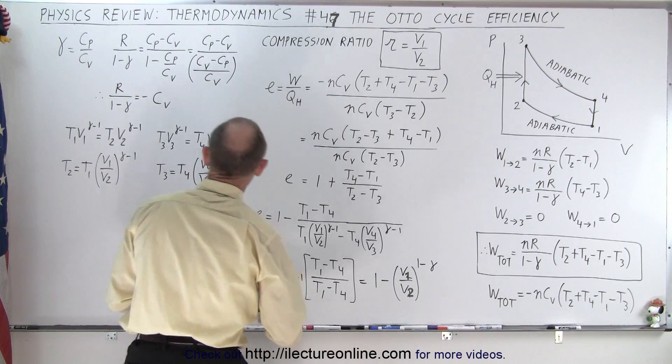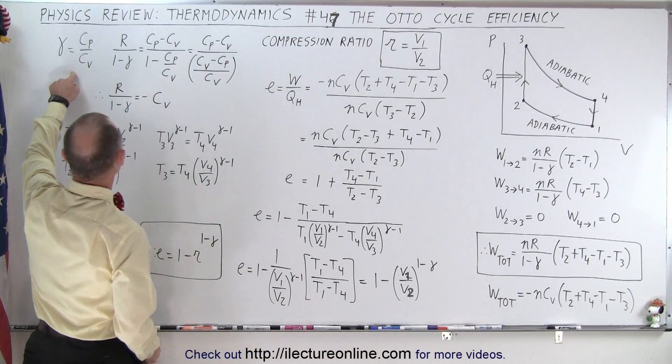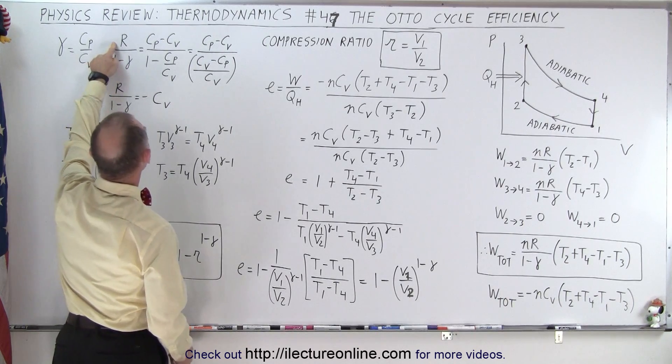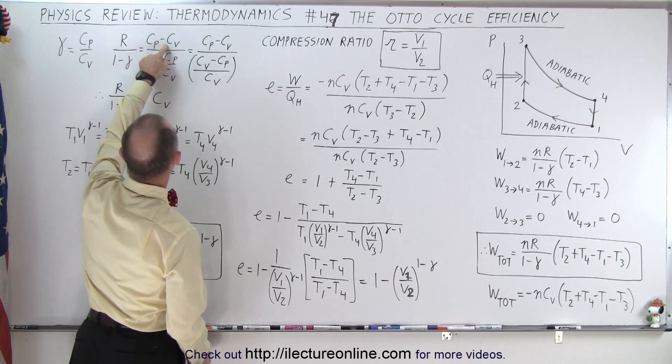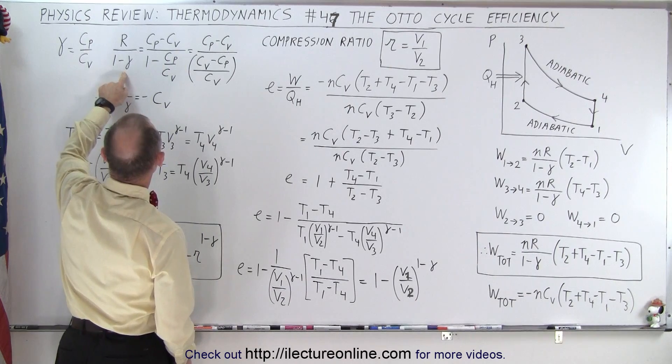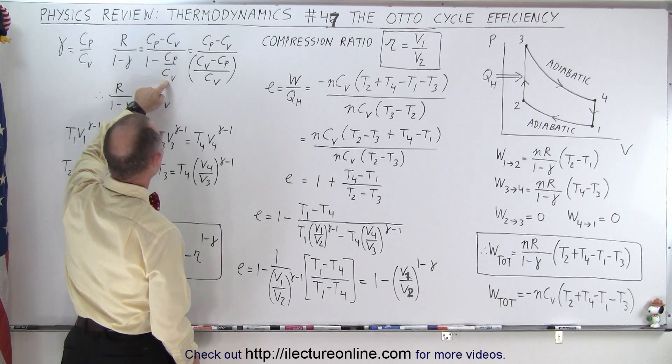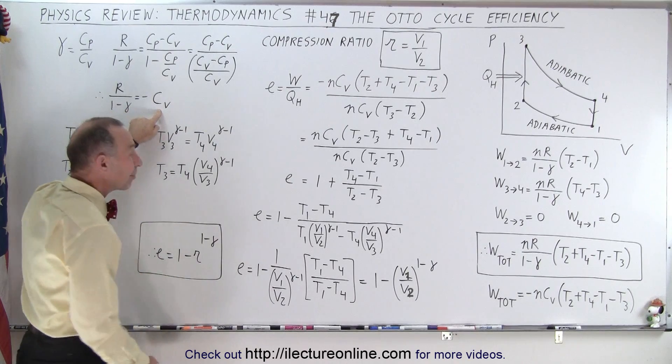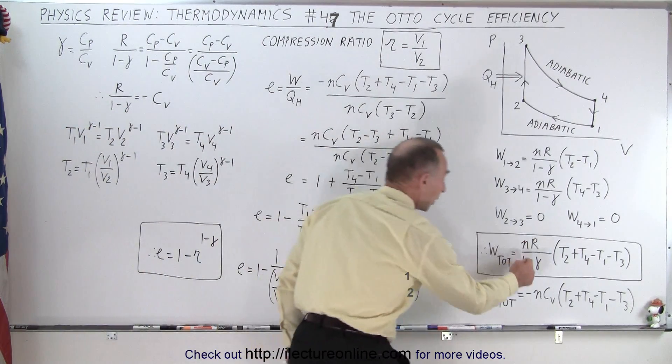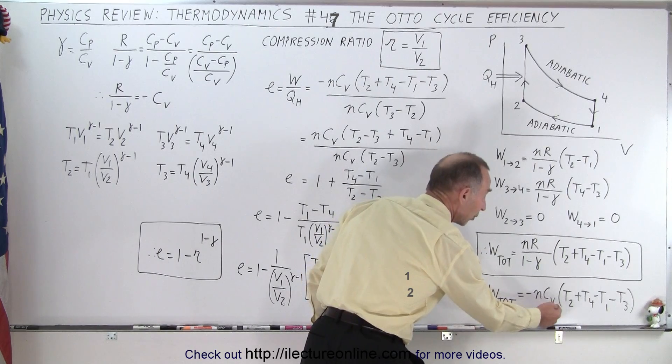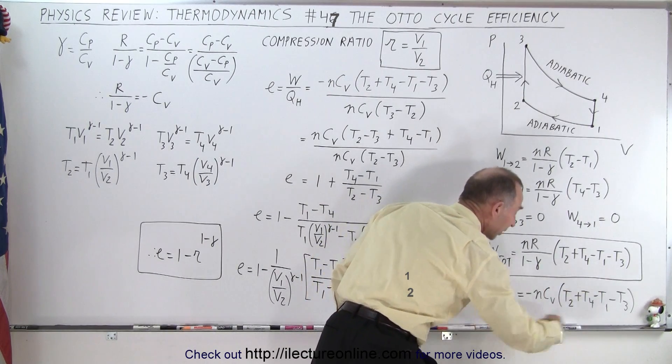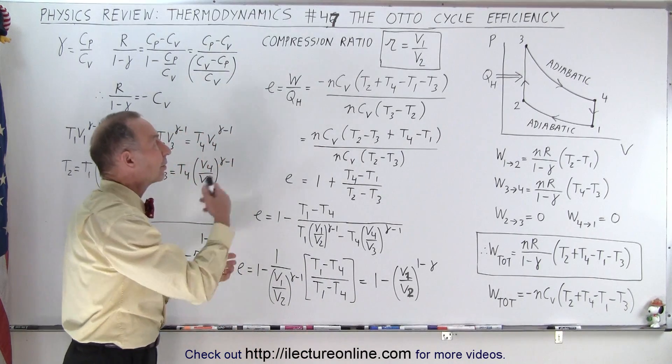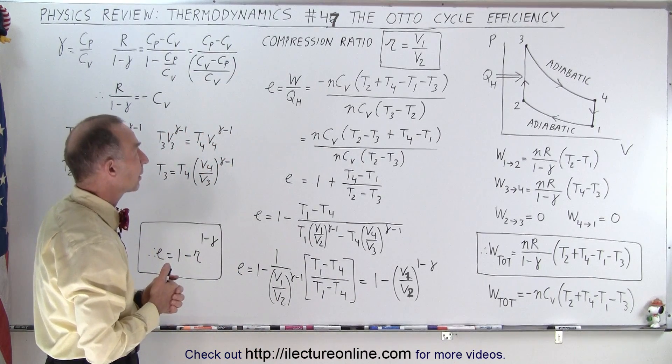We can simplify that by realizing that gamma is Cp over Cv, and so R can be written as Cp minus Cv, and 1 minus gamma can be written as 1 minus Cp over Cv. Algebraically, this simplifies to simply minus Cv, so we could replace R divided by 1 minus gamma by minus Cv. That becomes a simplified form of the work done by the Otto cycle.